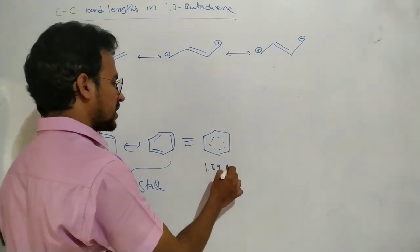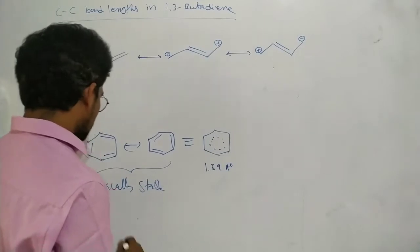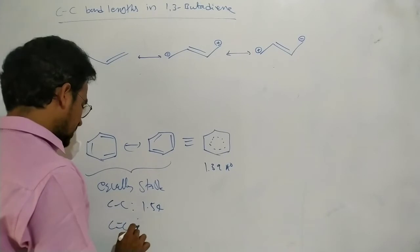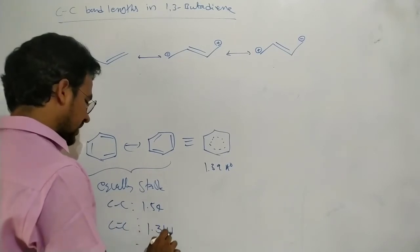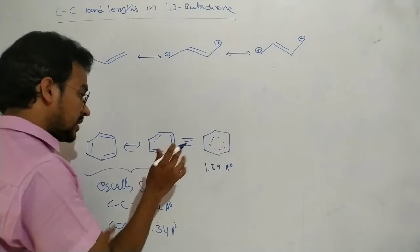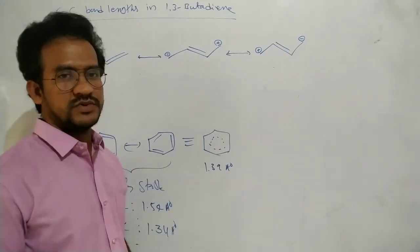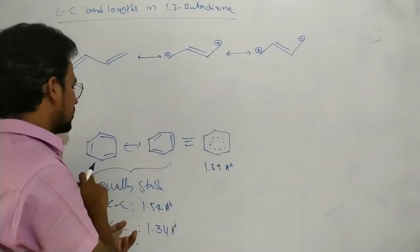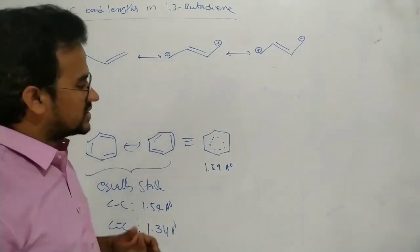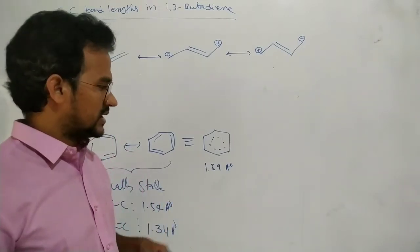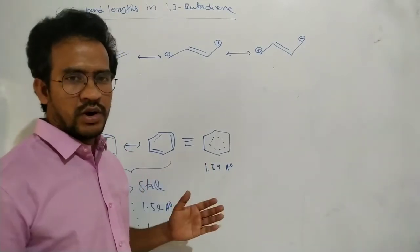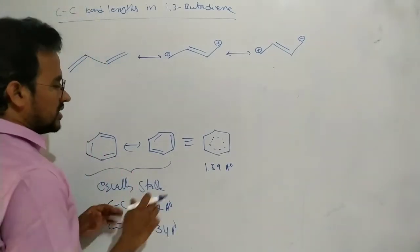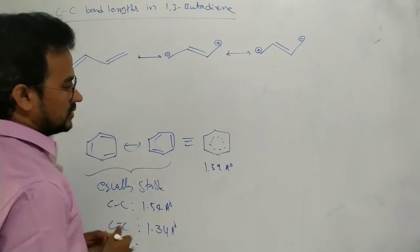That bond length is nothing but 1.39 angstroms. The carbon-carbon single bond length is 1.54 angstroms and the carbon-carbon double bond length is 1.34 angstroms. But in benzene, the carbon-carbon bond length is 1.39 angstroms. Because of the delocalization of electrons, this double bond becomes a single bond and single bond becomes a double bond — there is a variation in the carbon-carbon bond length that is in between the single bond and double bond lengths. So in benzene, all carbon-carbon bonds have equal bond length.